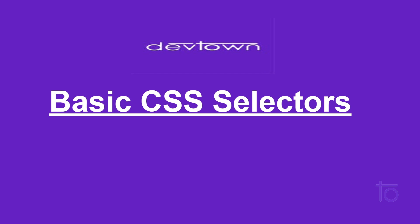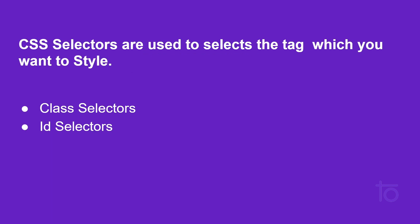CSS selectors are used to select the tag which you want to style. That is the basic meaning of selectors — we use them just to select the tags we want to style. There are basically two selectors: the first one is class selectors and the second one is ID selectors.